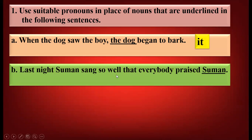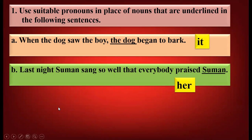Last night, Suman sang so well that everybody praised Suman. Here, Suman is a name of a girl and this word is underlined. So Suman is a female. We are going to use 'her' over here. Because the verb 'praised' has come before Suman, we use 'her' instead of 'she'. We will not use 'she' because this name Suman has come after the verb 'praised'.